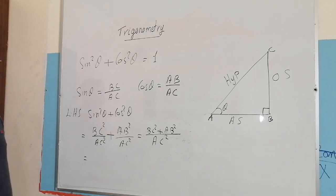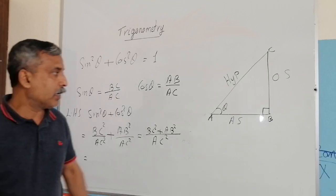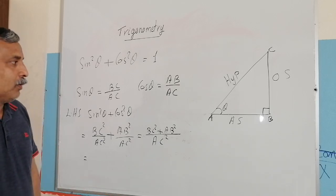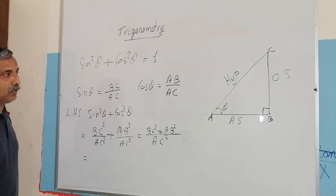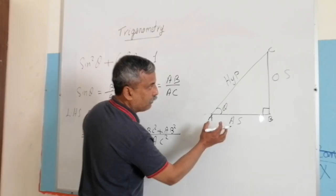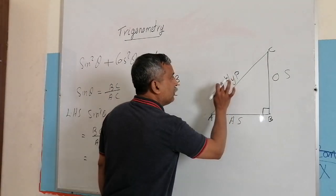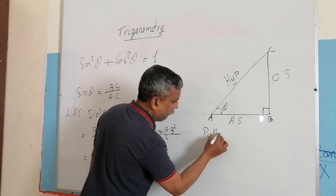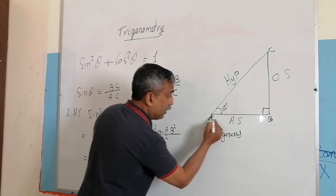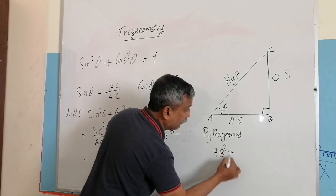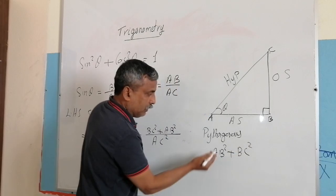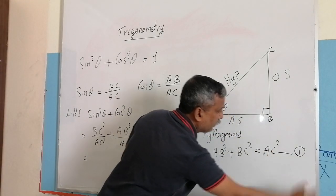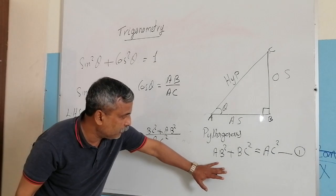Now let me invite your attention to a previous knowledge regarding the Pythagorean theorem. In a right triangle, the Pythagorean theorem states that the sum of the squares of the two smaller sides equals the square of the bigger side. In this triangle, AB squared plus BC squared equals AC squared. Let me call this equation number one.